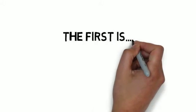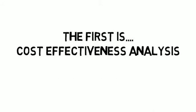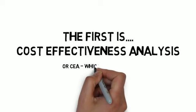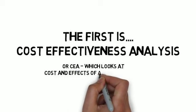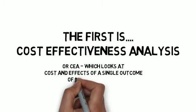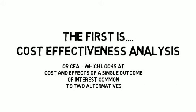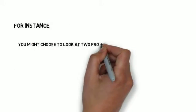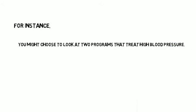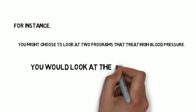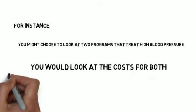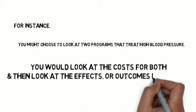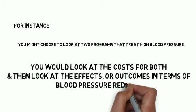The first is cost-effective analysis, or CEA, which looks at the cost and effects of a single outcome of interest common to two alternatives. Valuation in CEA is normally tracked by natural units. For instance, you might choose to look at two programs that treat high blood pressure. You would look at the cost for both and then look at the effects or outcomes in terms of blood pressure reduced.